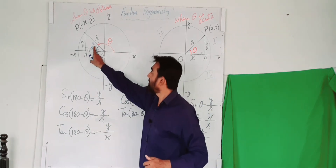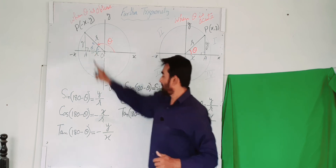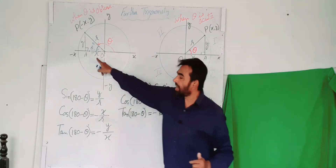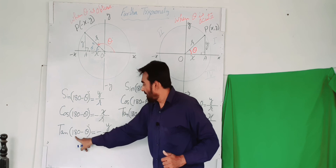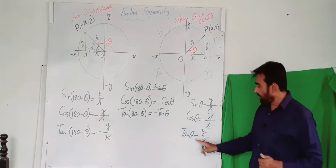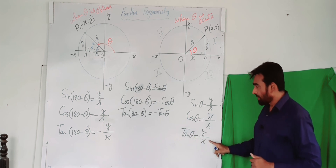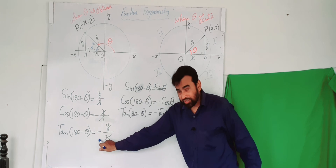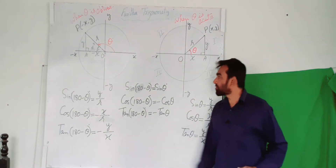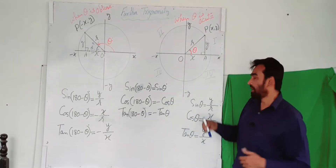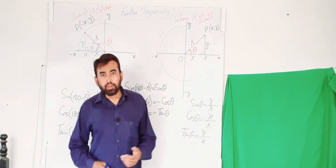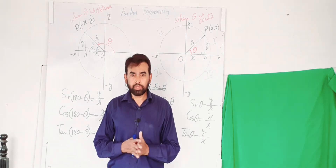Similarly, tan(180 - θ) = perpendicular/base = y over (-x) = -y/x. Since tan θ = y/x, and tan(180 - θ) = -y/x, with the negative sign we can equate tan(180 - θ) = -tan θ. So all three identities have been proven. Hope you have understood how these three identities are calculated. You can ask any question in the comments. Thank you so much.